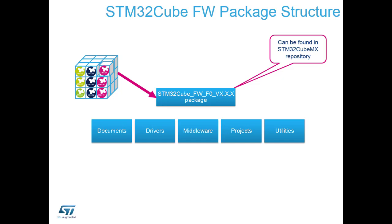Middlewares covers add-ons like FreeRTOS and USB libraries. If it's a graphics-based device, it would include the MWIN graphics libraries, FATFS for a file system, and so on. There are lots of different middlewares automatically included in the cube library packs.